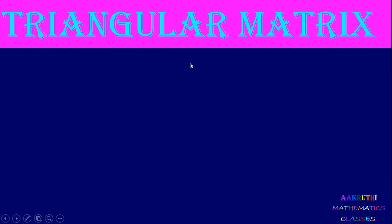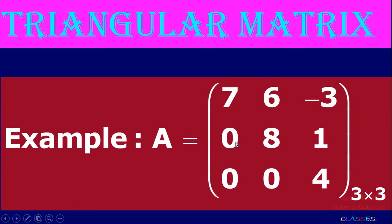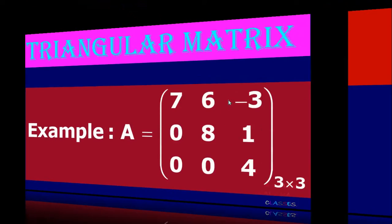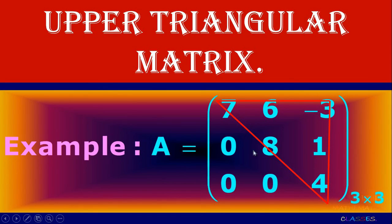Next type is triangular matrix. A square matrix having elements below or above the diagonal elements equal to zero is called a triangular matrix. Upper triangular matrix: a square matrix having all elements below the diagonal equal to zero. Example: A equal to [7, 6, -3; 0, 8, 1; 0, 0, 4] is an upper triangular matrix.